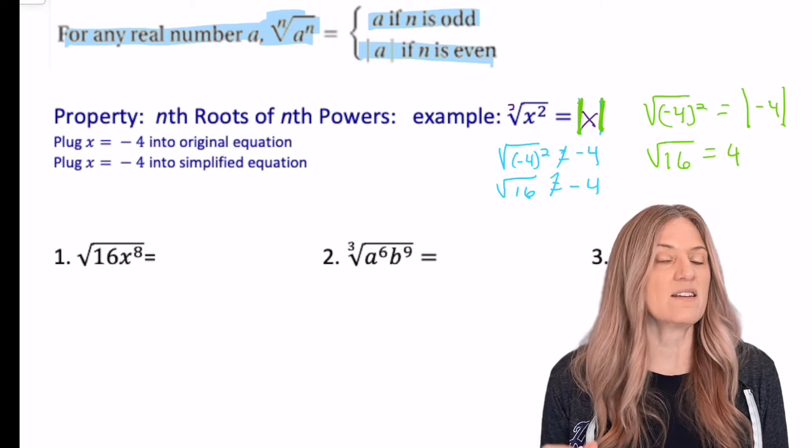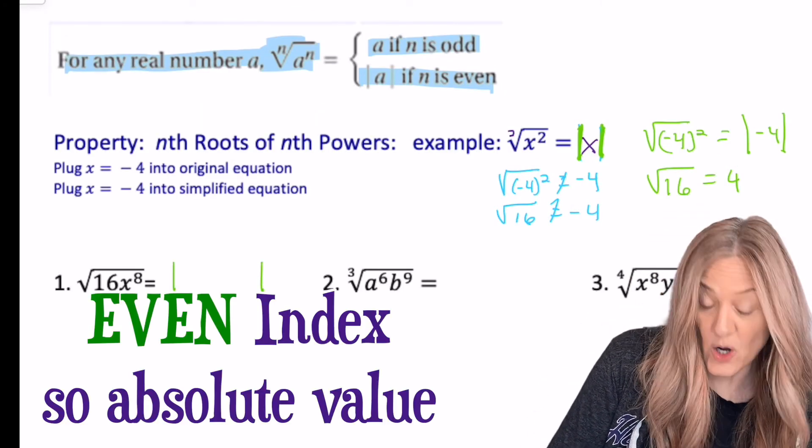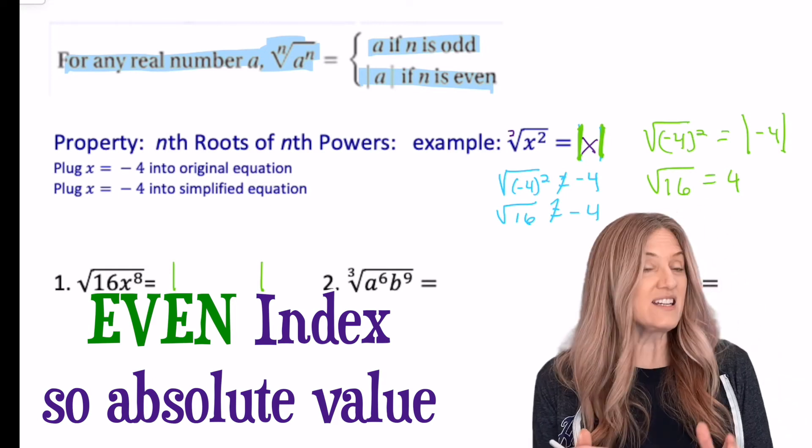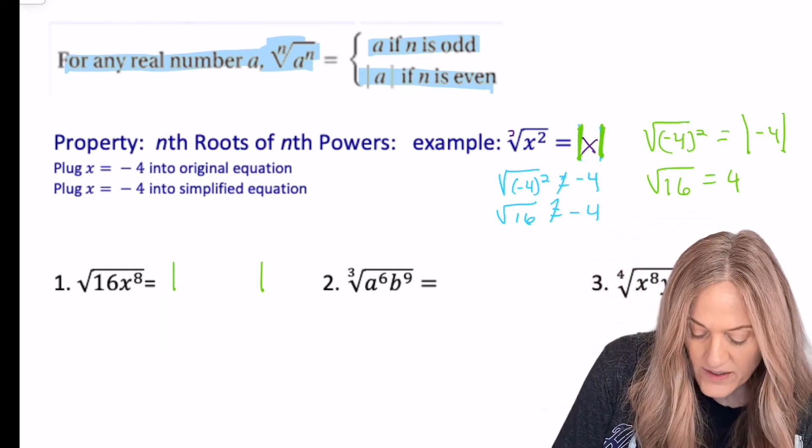So when I look at number one and it's the square root, I'm going to put absolute value right away so that I don't forget. Then I need to take that square root of 16x to the eighth. Just to walk us through it a little bit,